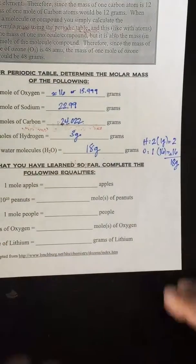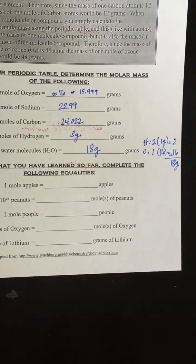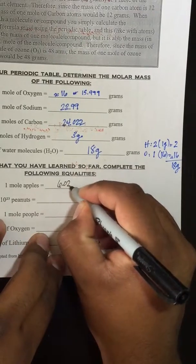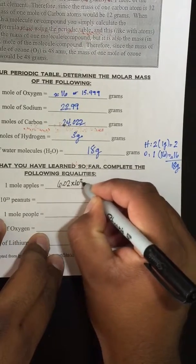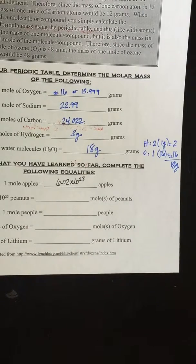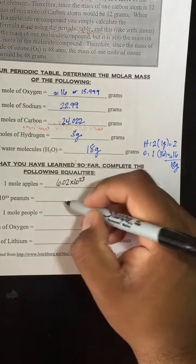One mole of apples equals how many apples? 6.02 times ten to the twenty-third. And 6.02 times ten to the twenty-third peanuts equals how many moles of peanuts? One. Very good.